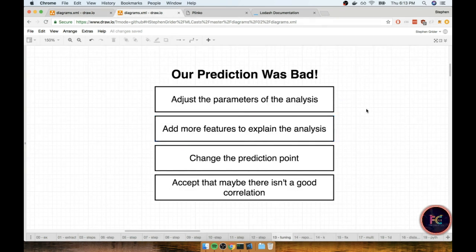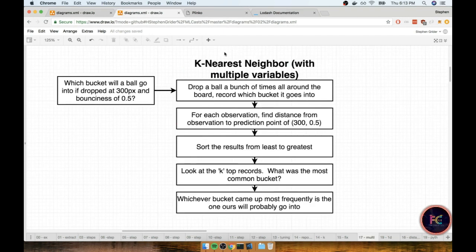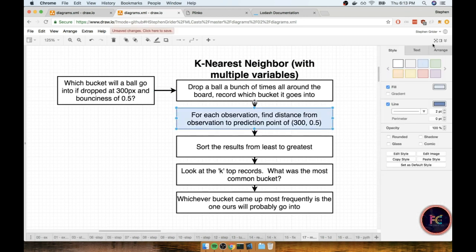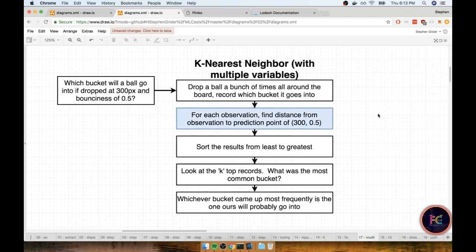Let's talk a little bit about how we're going to modify that algorithm to include multiple different features. All right, so here's the modified algorithm for using multiple variables. Now I could definitely walk this thing step by step, but I'm going to tell you right now the only real step that changes in the entire flow is that distance calculation.